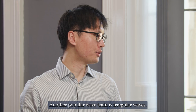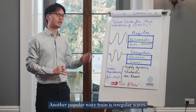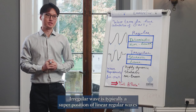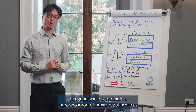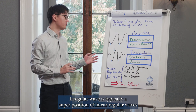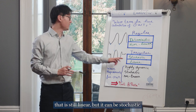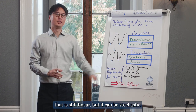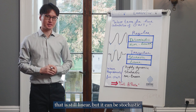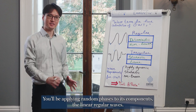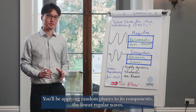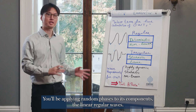Another popular wave train is irregular waves. Irregular wave is typically a superposition of linear regular waves, thus it's still linear. But it can be stochastic — you'll be applying random phases to its components, the linear regular waves.